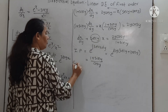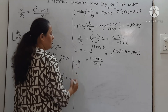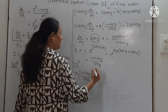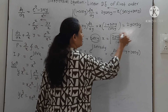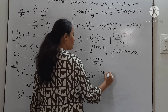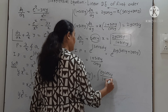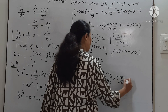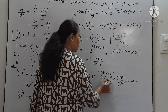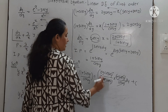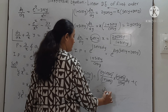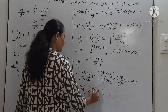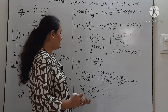Since this is linear in x, the solution is x · (1 + sin y)/cos y = ∫[2y cos y/(1 + sin y)] · [(1 + sin y)/cos y] dy + c. The cos y terms cancel and the (1 + sin y) terms cancel, leaving ∫2y dy = y². Therefore the solution is x(1 + sin y)/cos y = y² + c.